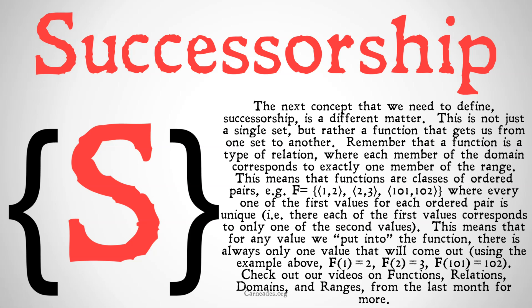For example, the function f could be the class of the ordered pair (1, 2), the ordered pair (2, 3), and the ordered pair (101, 102), where every one of the first values for each ordered pair is unique. In other words, each of the first values corresponds to only one of the second values. This means that for any value that we put into the function, there is always only one value that will come out.